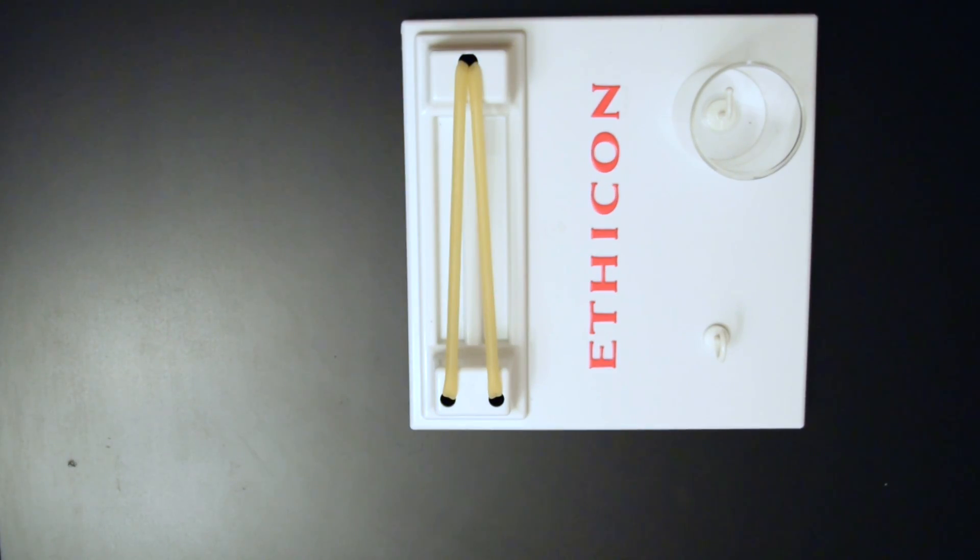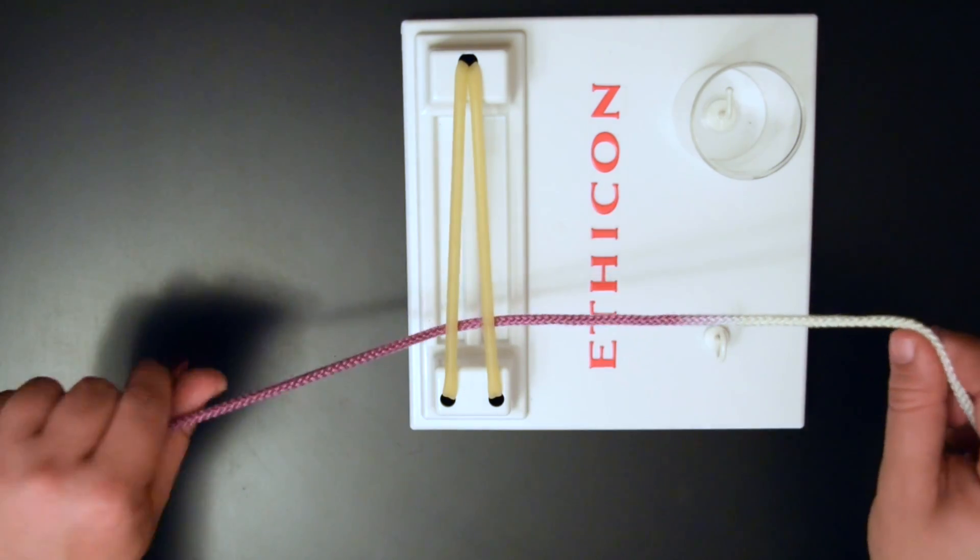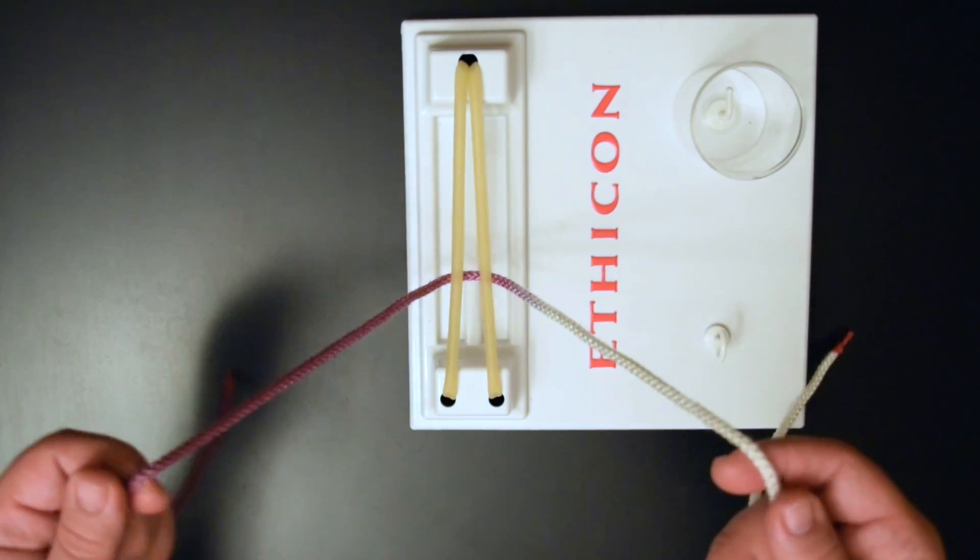In this video we're going to go through how to do a slip knot again utilizing the one-handed technique. But this time we're going to pop off our needle. You're going to need something to tie to, something to tie with. I'm using this two-tone rope. And again in this video we're going to assume that you've looked at the prior videos on how to do a one-handed knot and that you're proficient at that.